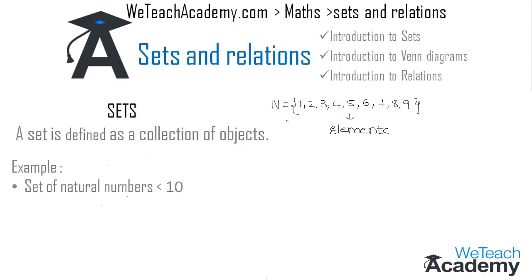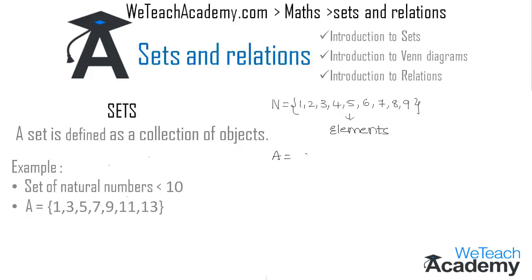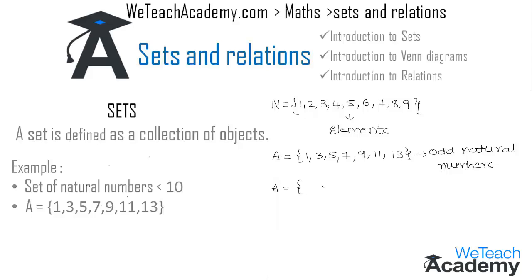Now let us learn what is set builder form. Consider the example: A = {1, 3, 5, 7, 9, 11, 13}. We observe that the elements of this set are the odd natural numbers. In set builder form, we describe a set by a common property shared by all its elements. We denote x to represent every element of the set and write it as: x such that x is an odd natural number and x is less than 14.